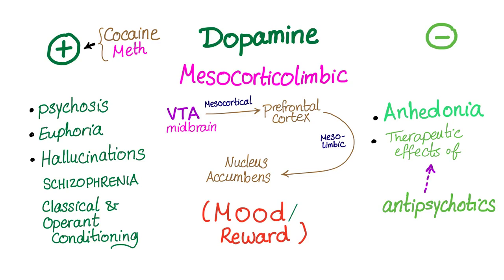The mesocorticolimbic pathway: 'meso' means midbrain, 'cortico' is cortex, 'limbic' is the limbic system. We start in the ventral tegmental area of the midbrain. Through the mesocortical pathway — from midbrain to prefrontal cortex — impulses are flowing, and also from the prefrontal cortex to the nucleus accumbens; this is the mesolimbic pathway. Increased dopamine will lead to heightened mood — you are so happy to the extent of psychosis, euphoria, hallucinations. This is schizophrenia.